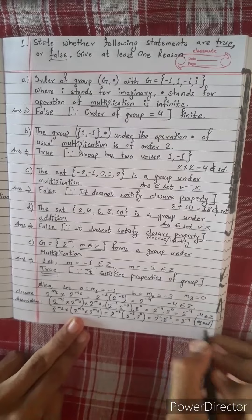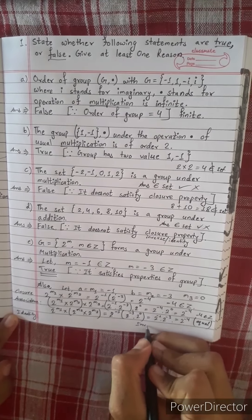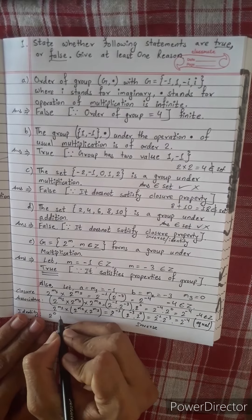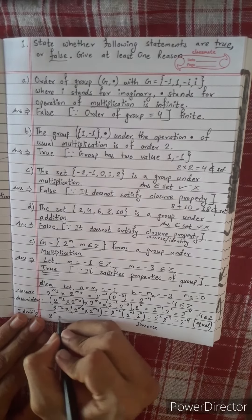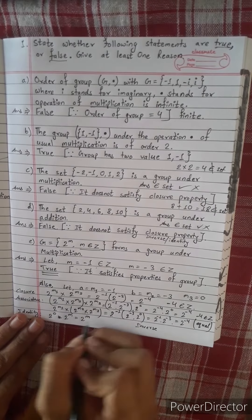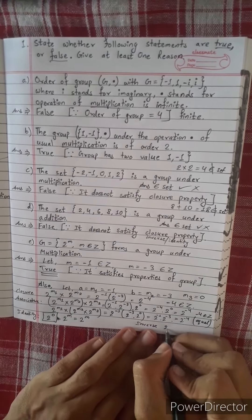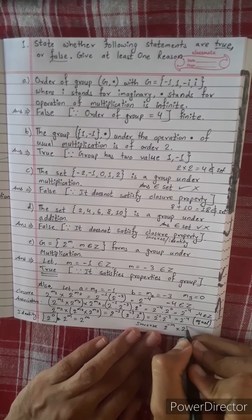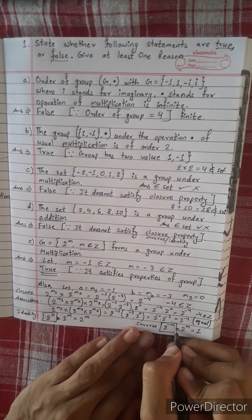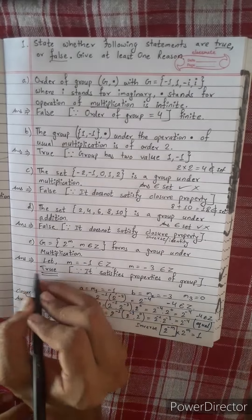Associative property satisfied, the identity inverse. Identity 1 equal 2 power 0. 2 power 0, J multiply 2 power m1. J multiply 2 power m1 equal 2 power m1. Identity element. When you see inverse exists, identity exists, associativity satisfied, closure satisfied. So it is a group.